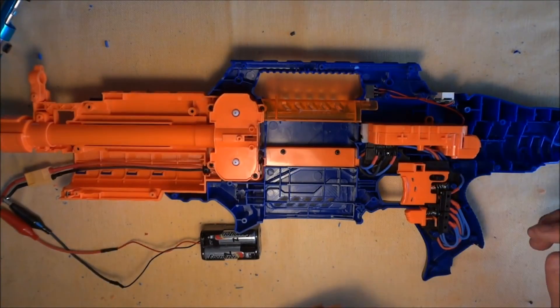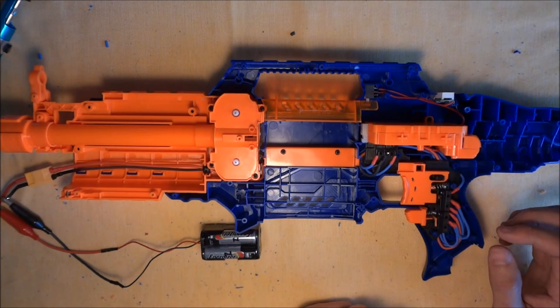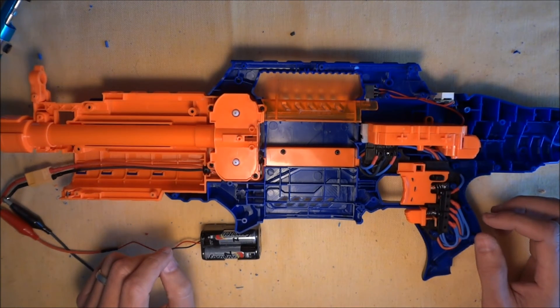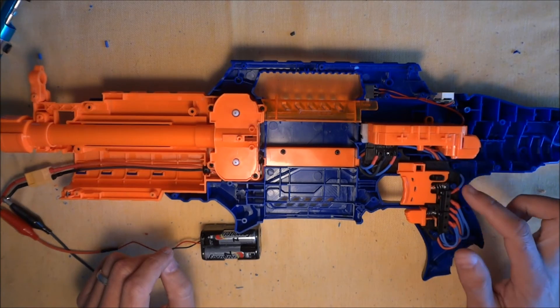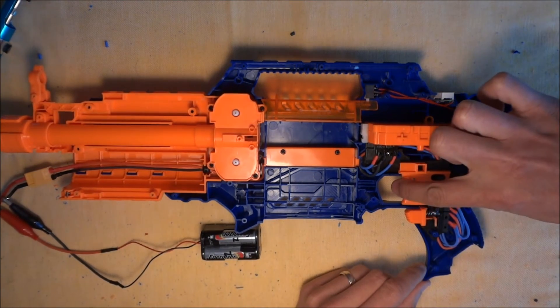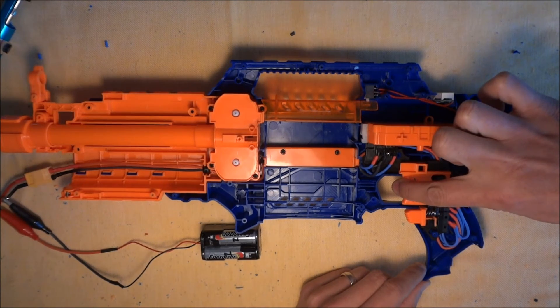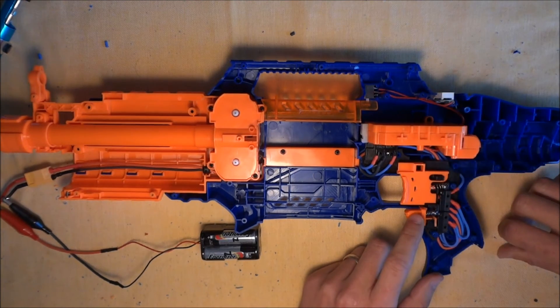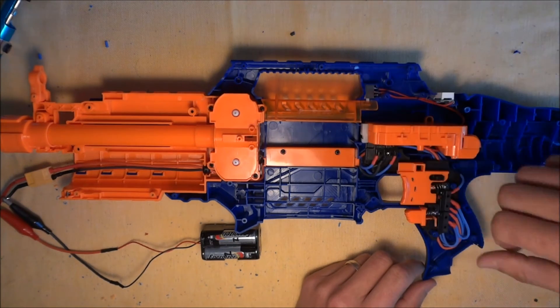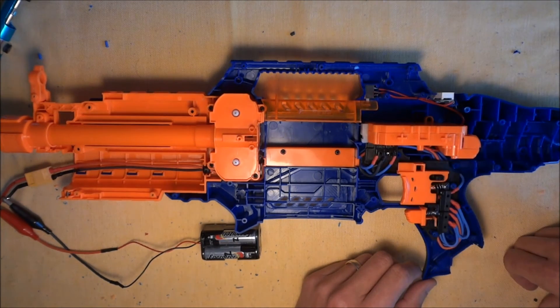Alright, so we've got our rapid strike stage three kit all installed in the rapid strike. The way that we wire up our looms is you can't fire, the pusher won't work unless the rev trigger is pressed, and that just avoids pushing darts into stationary flywheels.